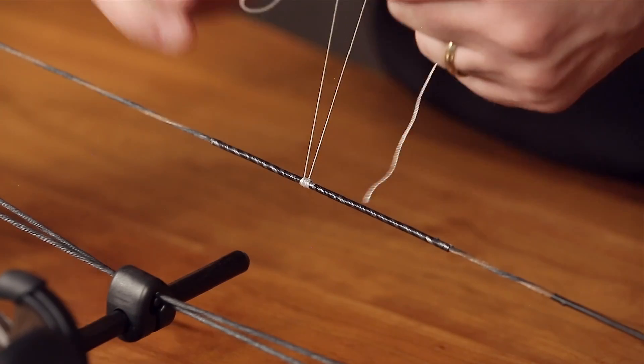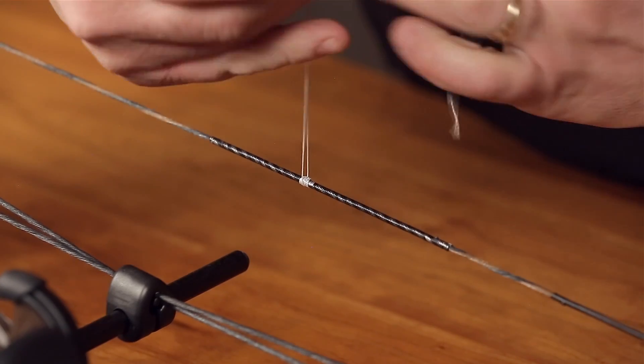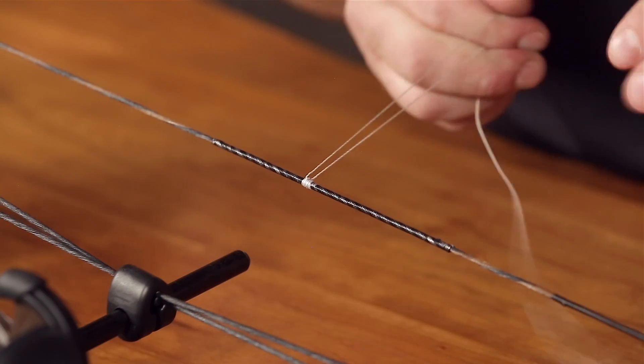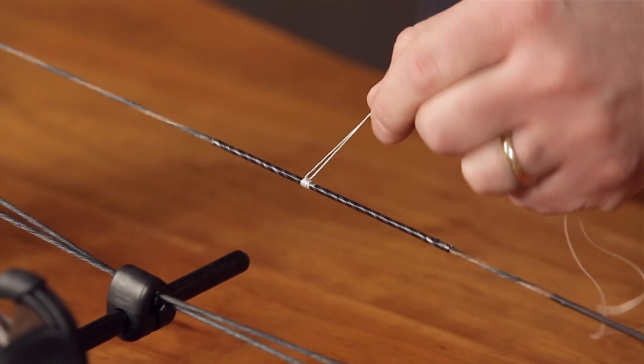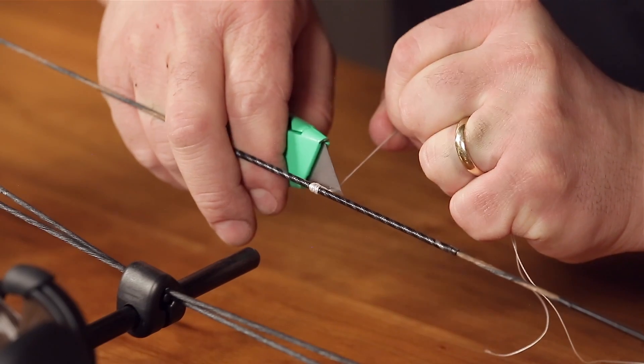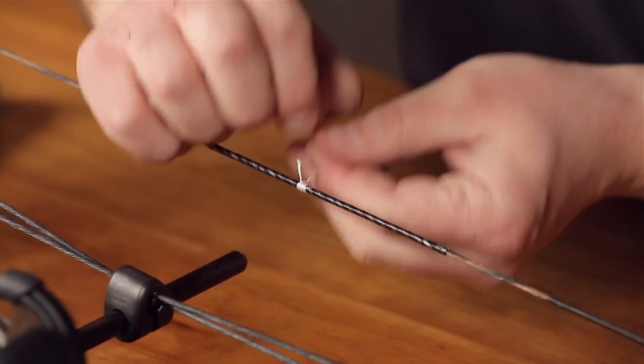Finish with a serving surgeon's knot and draw it down tight. At that point, take a cutting utensil and cut your extra material.